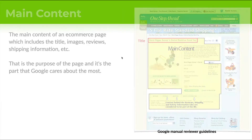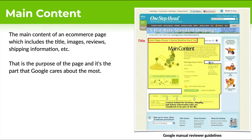Now we're going to go over a couple of examples from the manual reviewer guidelines. Google pays attention to this main content portion whenever trying to rank a page. For an e-commerce page it's slightly different than for a video page. For an e-commerce page, they're paying attention to the title, the images, the review detail stats, the reviews, the shipping information, and so forth.